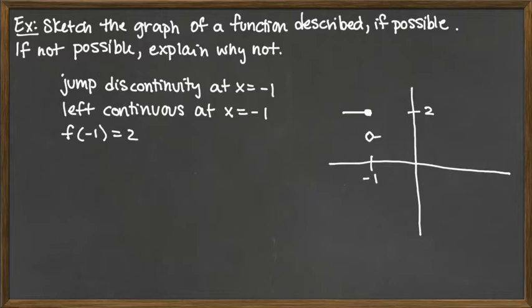That gives us a jump, it gives us the left continuity, and it gives us the right function value. And so we really have complete freedom just to keep this a function to make it look whatever we want past that. And so that would be an example that satisfies the three criteria listed. So it is possible, and we've provided an example.